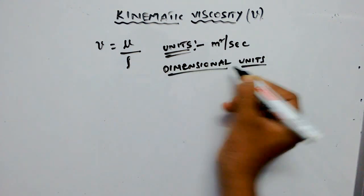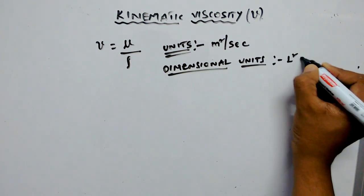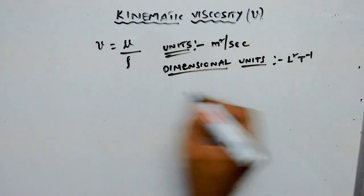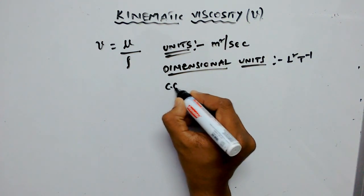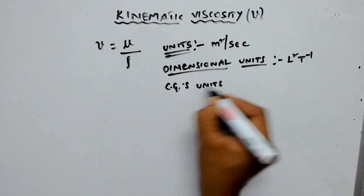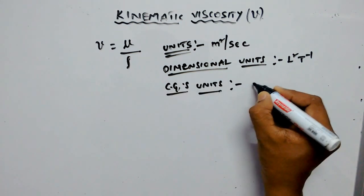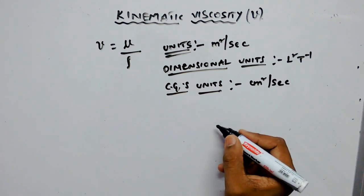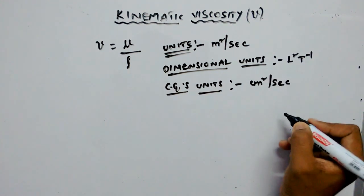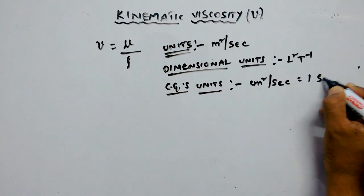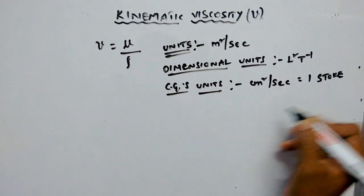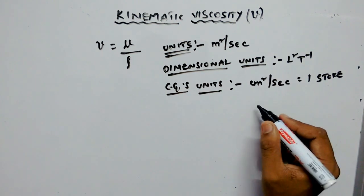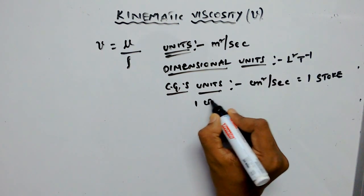are L² T⁻¹. In CGS units, centimeter squared per second. One centimeter squared per second equals one stoke. Stoke is the unit of kinematic viscosity in the CGS system. One centistoke equals...